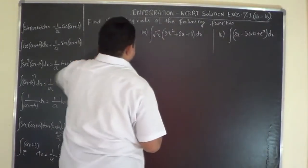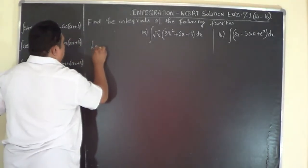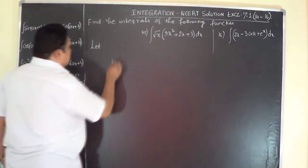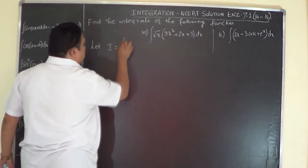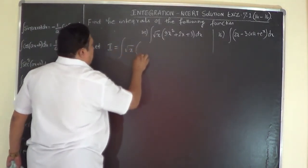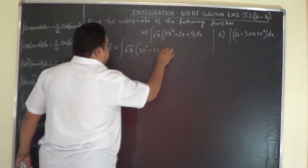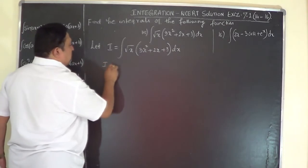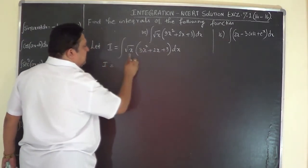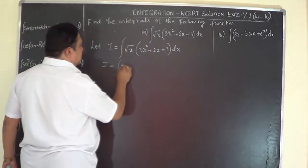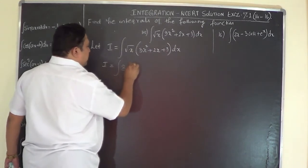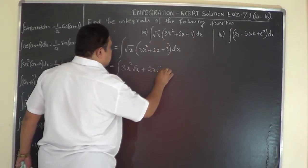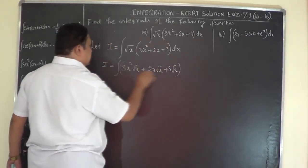For Problem 15, as usual, begin by calling the problem as I. Let I be equal to ∫√x · (3x√x + 2x + 3) dx. As usual, you have to multiply these three terms by √x: ∫(3x√x·√x + 2x·√x + 3√x) dx, which gives ∫(3x·√x·√x + 2x√x + 3√x) dx.